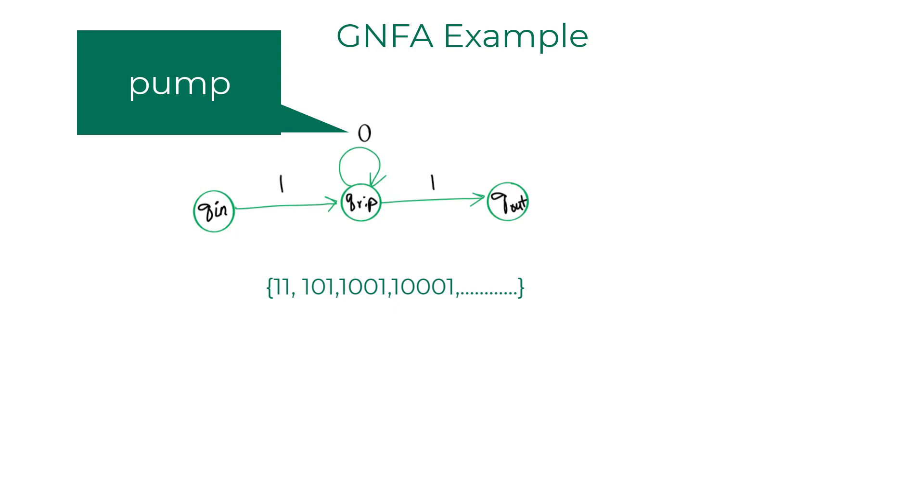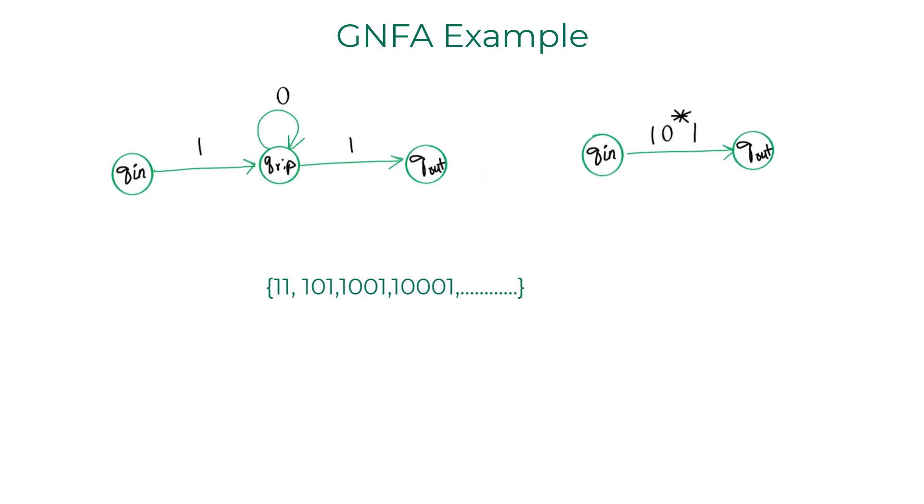The looping transition on 0 can be seen as a pump. It pumps the regular expression indefinitely into itself and it can be replaced by the star of the regular language. Hence we have 1 0 star 1 as the regular expression transition between qn and qout with qrip ripped away.